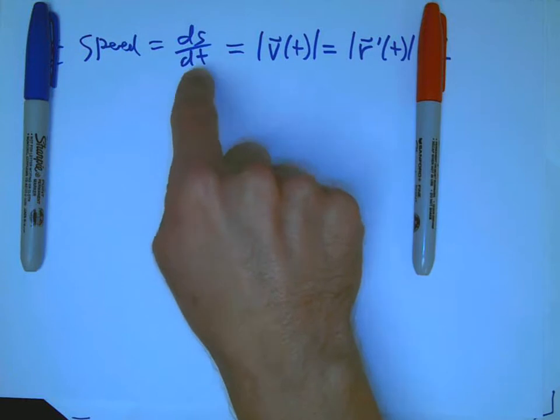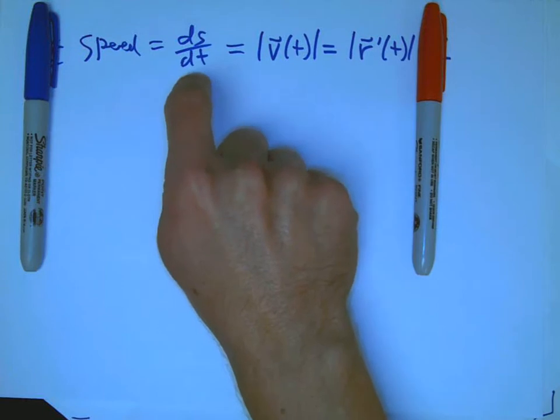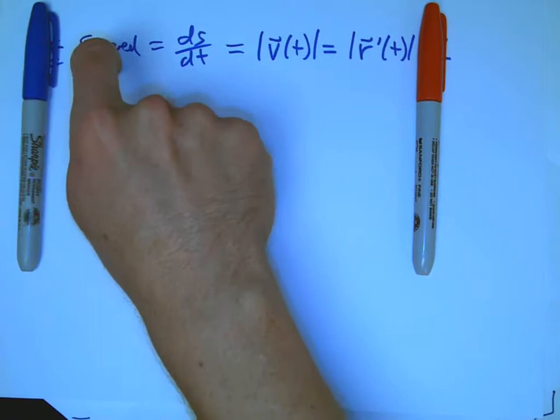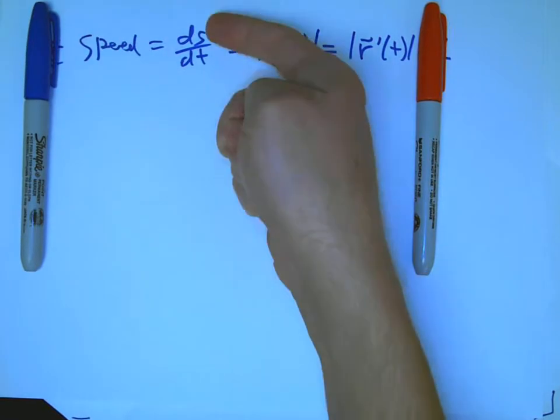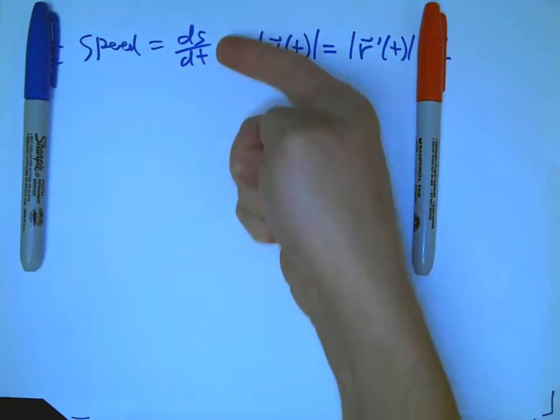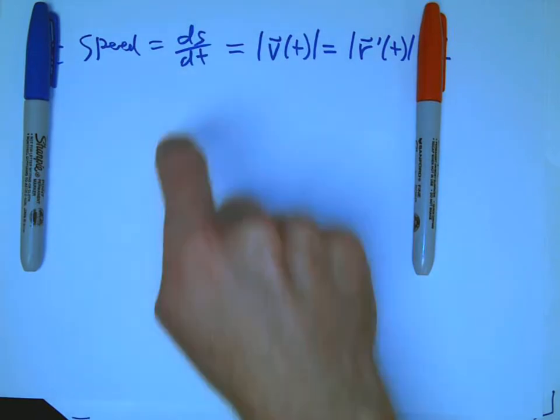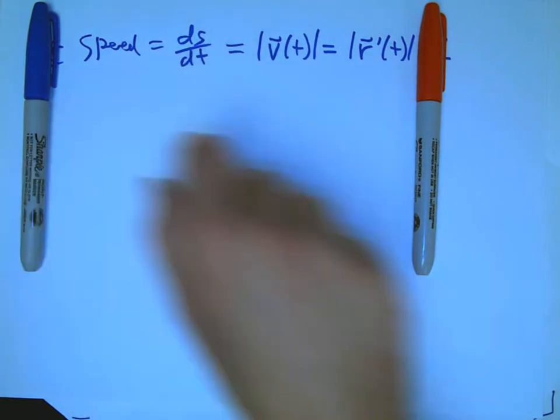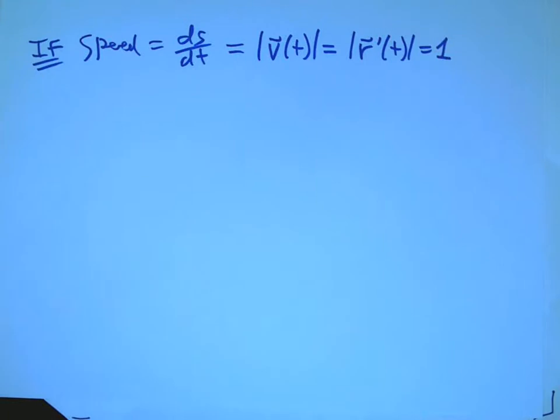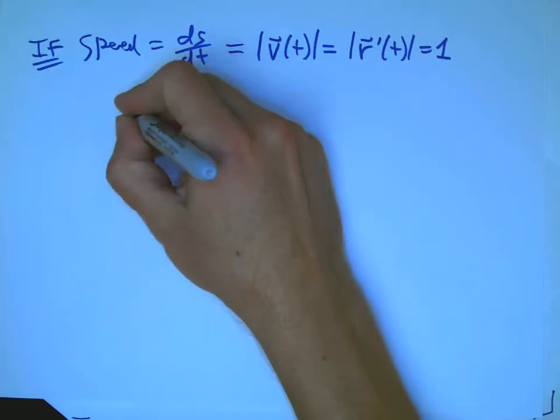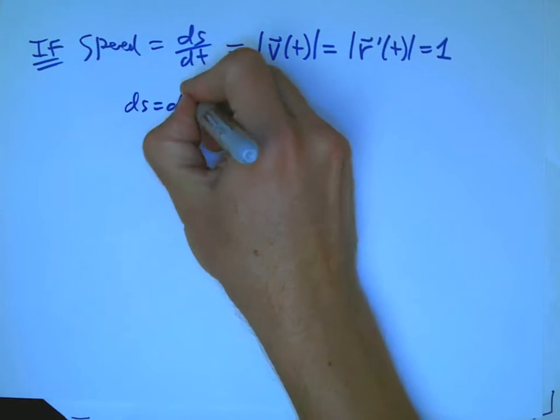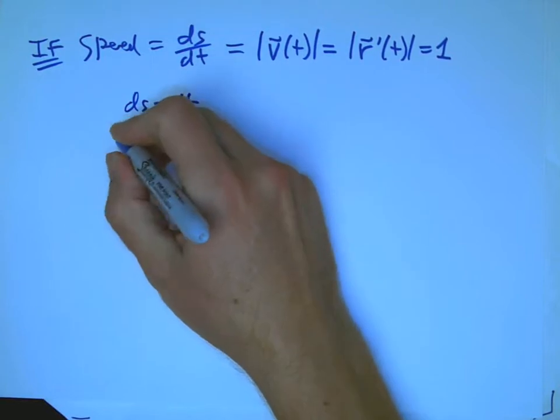But I also observed that another way to say it is that distance equals rate times time says that the rate, or the speed, is a little bit of distance divided by a little bit of time. This is a very standard formula from BC. And what does that mean if the speed is equal to one? So if the speed is equal to one, then ds is equal to dt, and so the integral of ds...